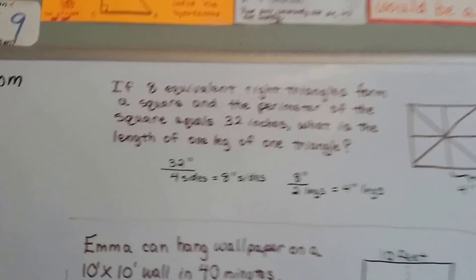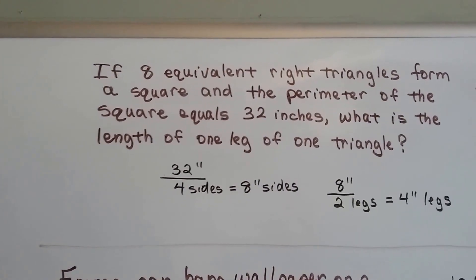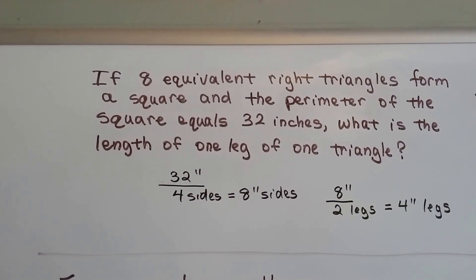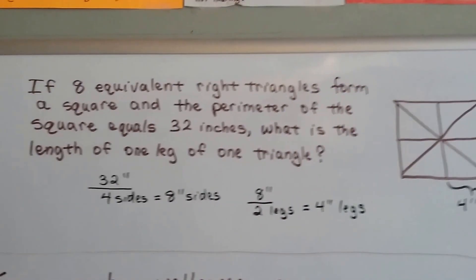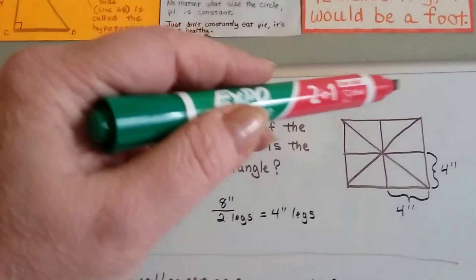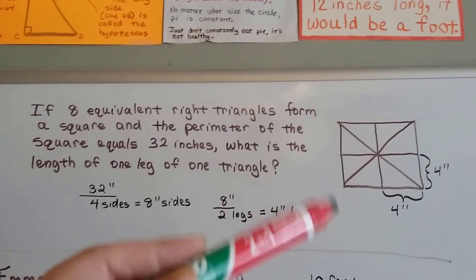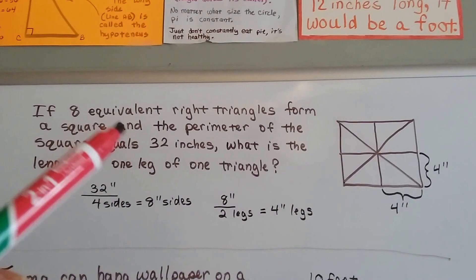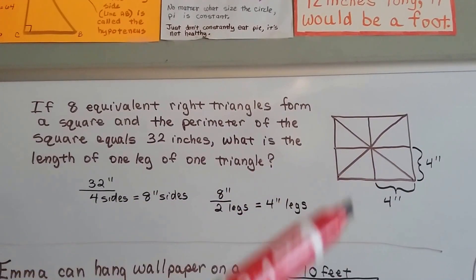So check this one out. If 8 equivalent right triangles form a square, and the perimeter of the square equals 32 inches, what is the length of one leg of one triangle? So it sounds really confusing until we draw a diagram or a picture. So it's going to make a square. So start by drawing a square first, and then figure out by practicing how to make 8 triangles that are right triangles. So here's 2, 4, 6, 8.